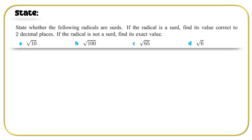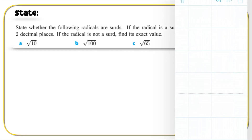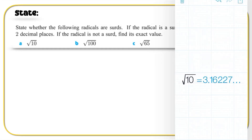First thing first, let's get out our calculator and do the root of 10. The root of 10 is 3.16227 and it carries on. So therefore it's a radical, but it's also a surd. We can write this as approximately 3.16.